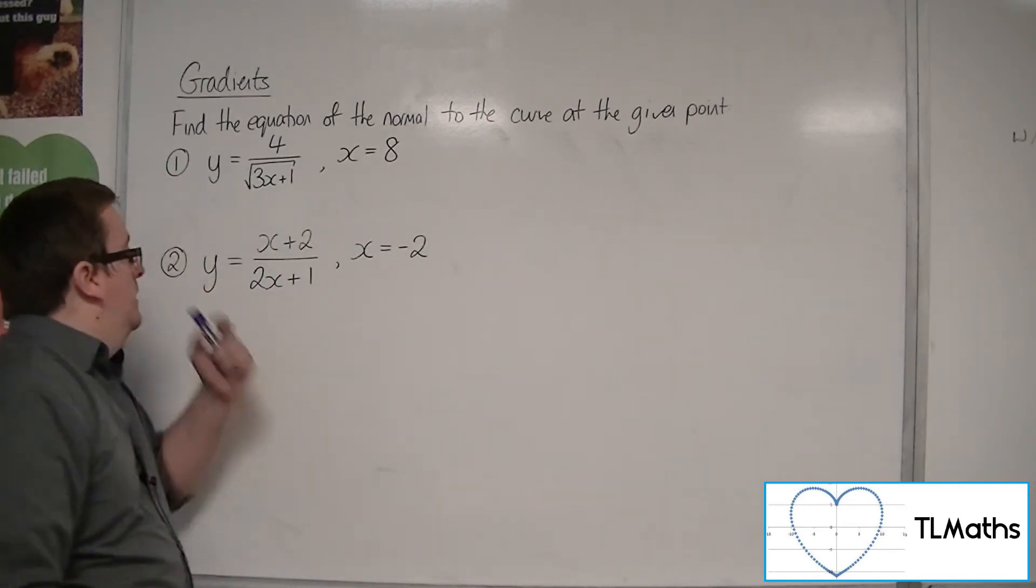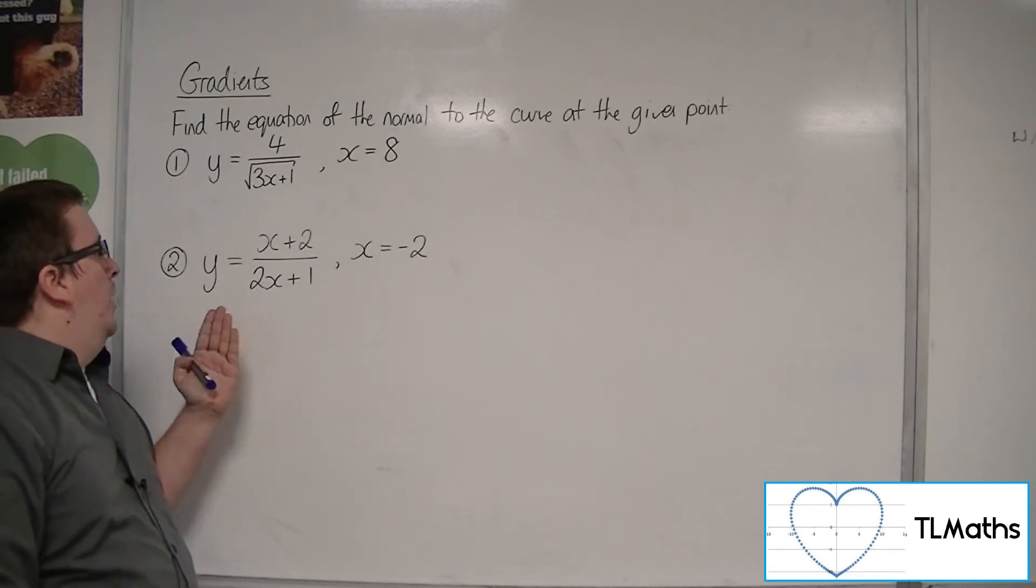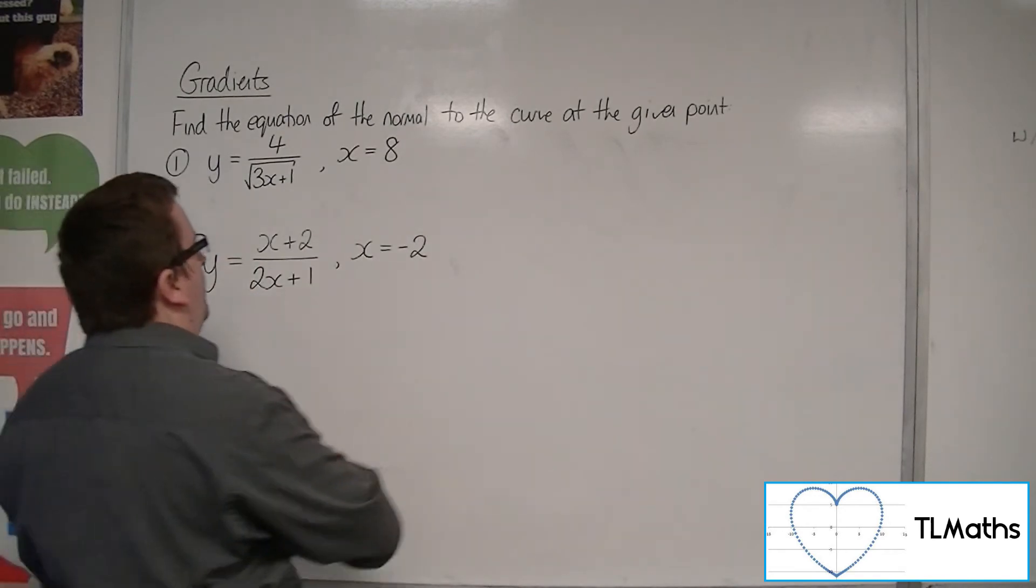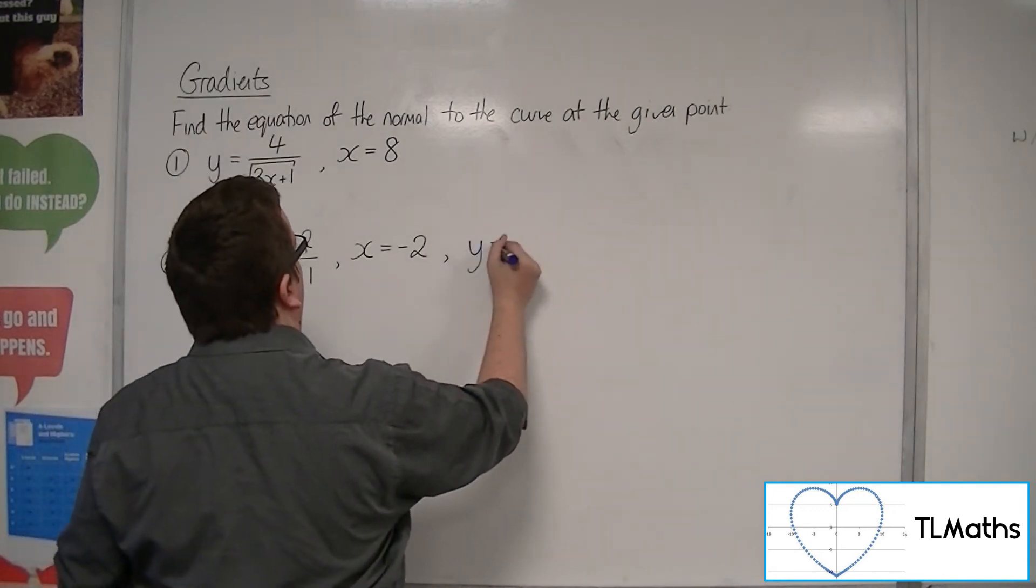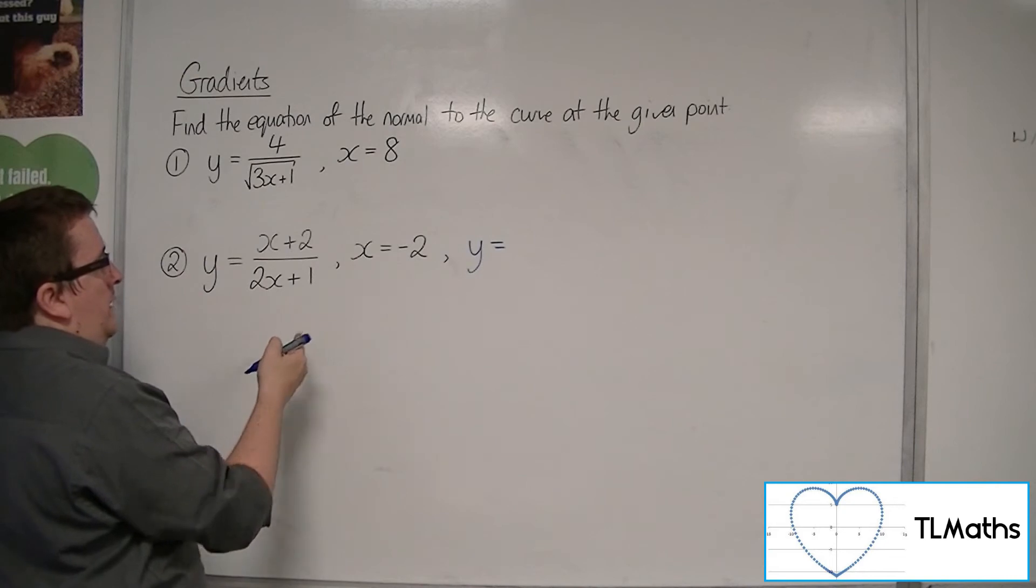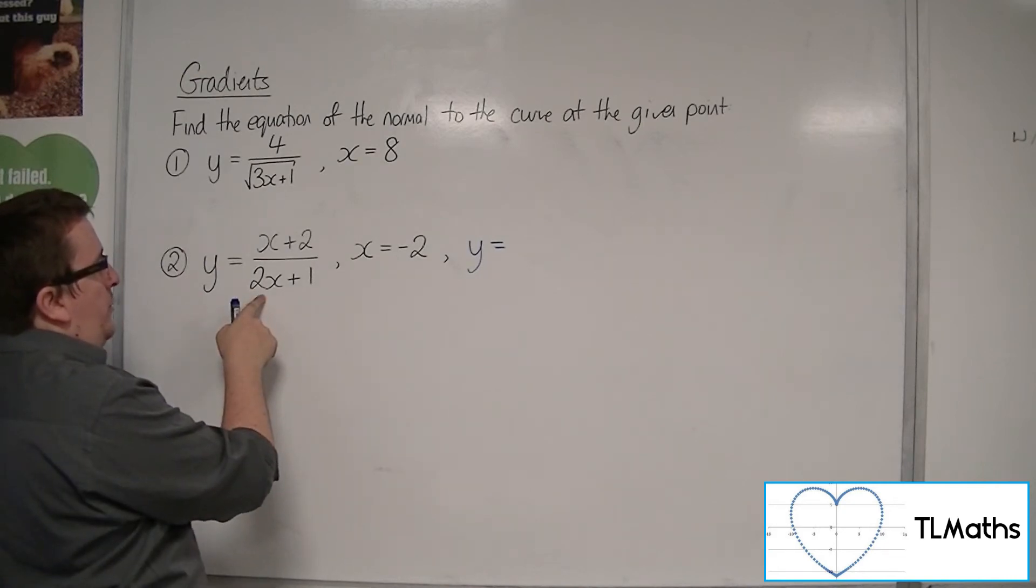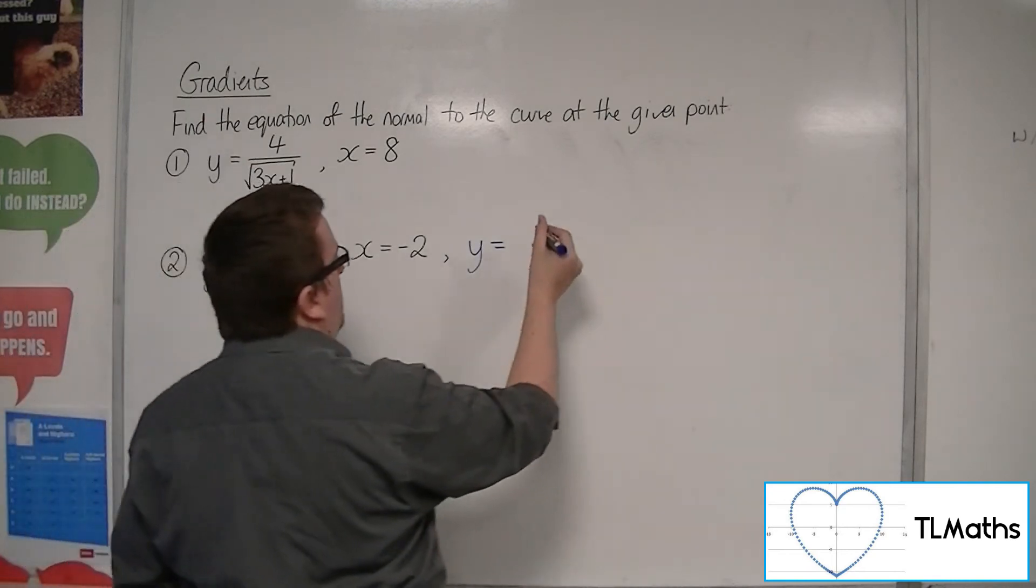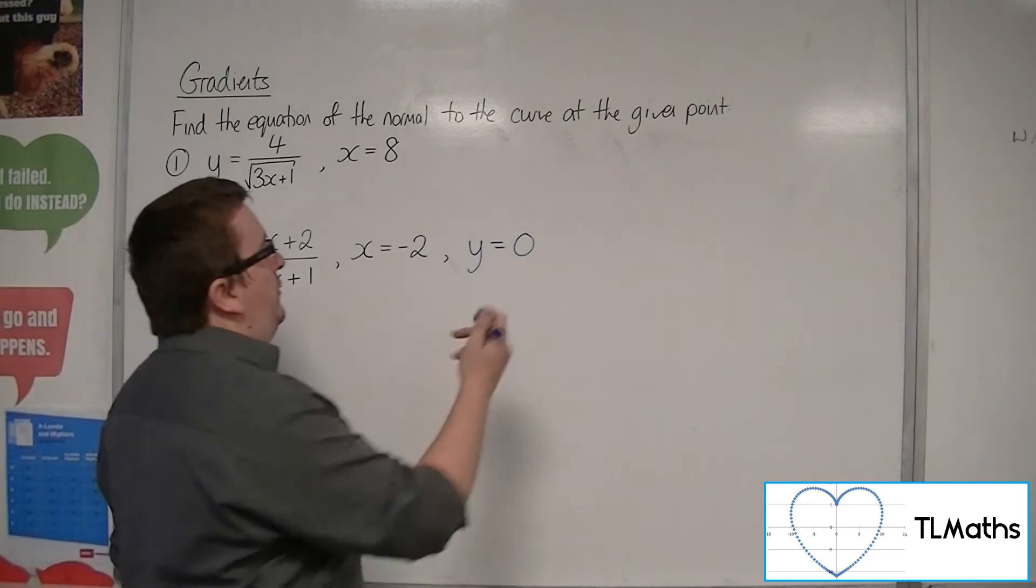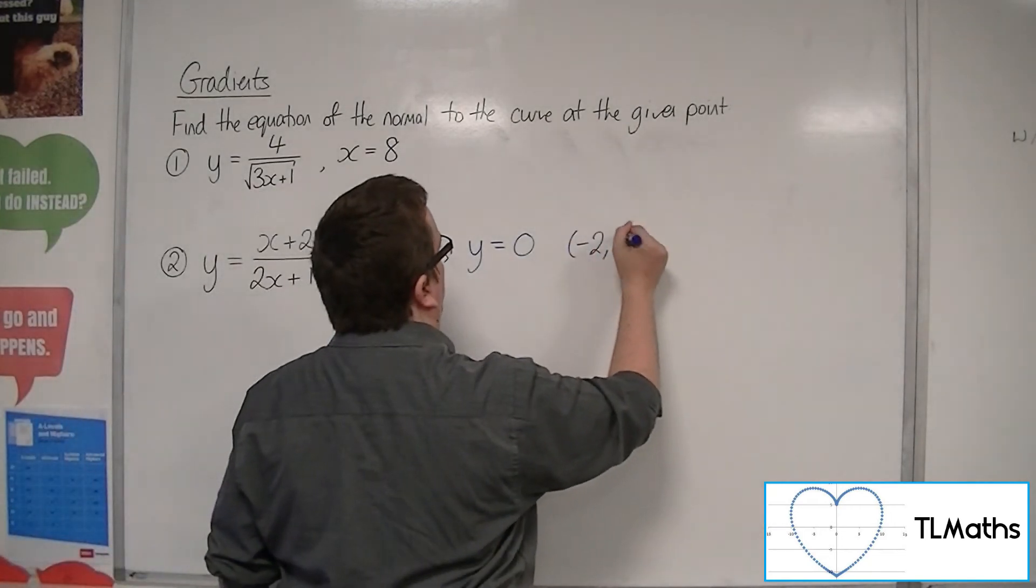Let's have a go at number 2 now. So we've got this y equals (x + 2) over (2x + 1), where x is equal to minus 2. So first of all, find the y value. So we're going to get minus 2 plus 2 in the numerator, we'll get minus 2 times 2, so minus 4, minus 3 in the denominator. So we get 0 over minus 3, so just 0. So minus 2, 0 are the coordinates we're going to use.